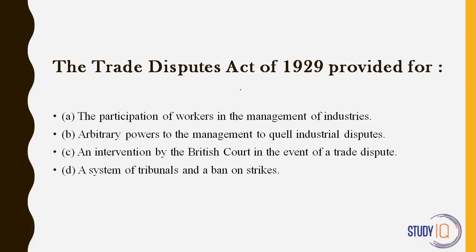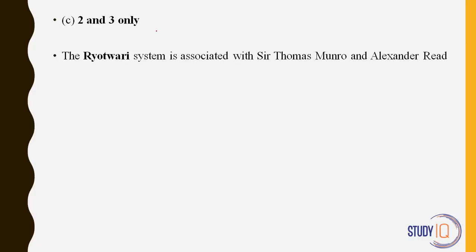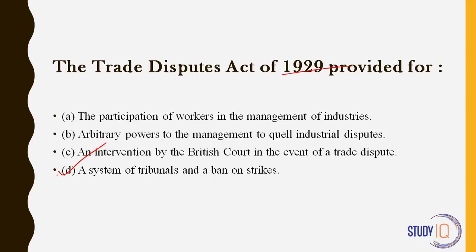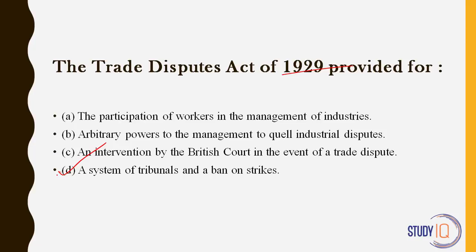The Trade Dispute Act of 1929 was provided for — now this act was brought to put a ban on strikes. There was a huge strike in 1926 and the British became very scared of strikes. They brought in this new Trade Dispute Act.